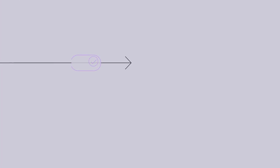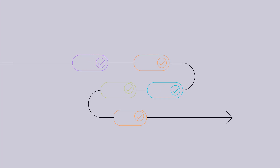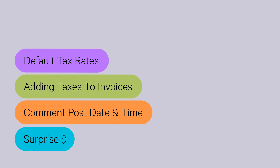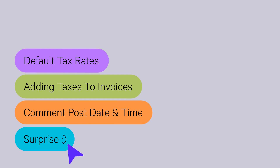Hello everyone, we hope you're ready for the new episode of Active Collab Monthly Recaps. We'll be talking about the improvements we've made in June: setting default tax rates, adding taxes to invoices quickly, and viewing a comment's posting date and time. Stay tuned till the end to hear a big surprise announcement.